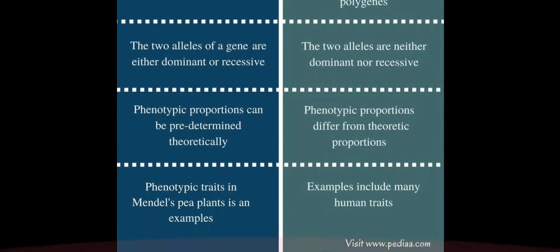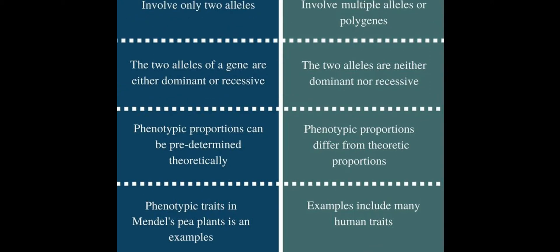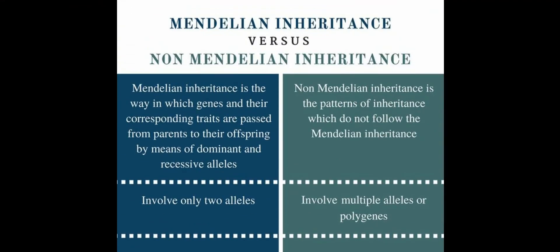In non-Mendelian inheritance, examples come from many human traits. Human traits are mainly polygenic. Examples include height — since there are millions and billions of humans in the world, they show different heights that cannot be simply classified as dominant or recessive. Blood groups and skin color are also human trait examples of non-Mendelian inheritance.